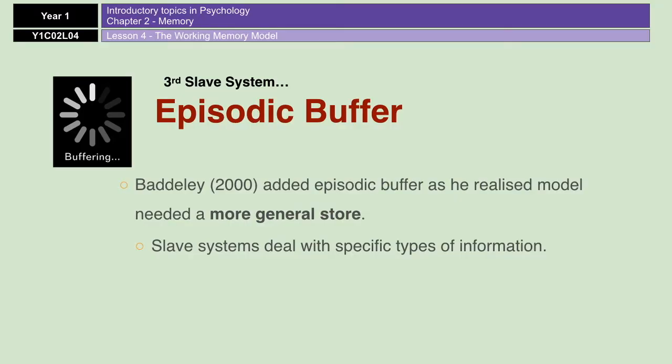The episodic buffer is also a storage component for the central executive, because the central executive doesn't actually have any storage of its own. It has a limited capacity of about four chunks, according to Baddeley in 2012. The episodic buffer also links working memory to long-term memory and to the wider cognitive processes that we have as humans, such as perception.